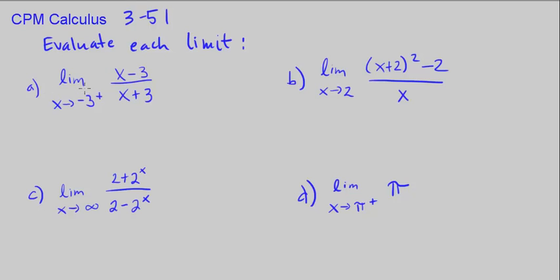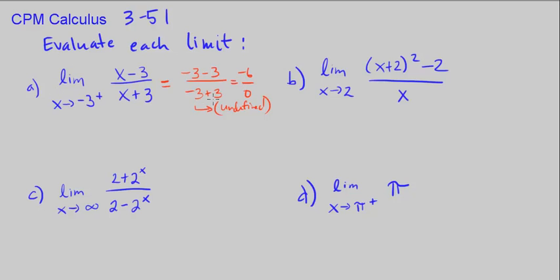Part A: we're asked to find the limit as x approaches negative 3 from the right side. If we plug in negative 3 — negative 3 minus 3 over negative 3 plus 3 — we get negative 6 over 0, which is undefined. When we're looking at limits, undefined just means we have to investigate it more.